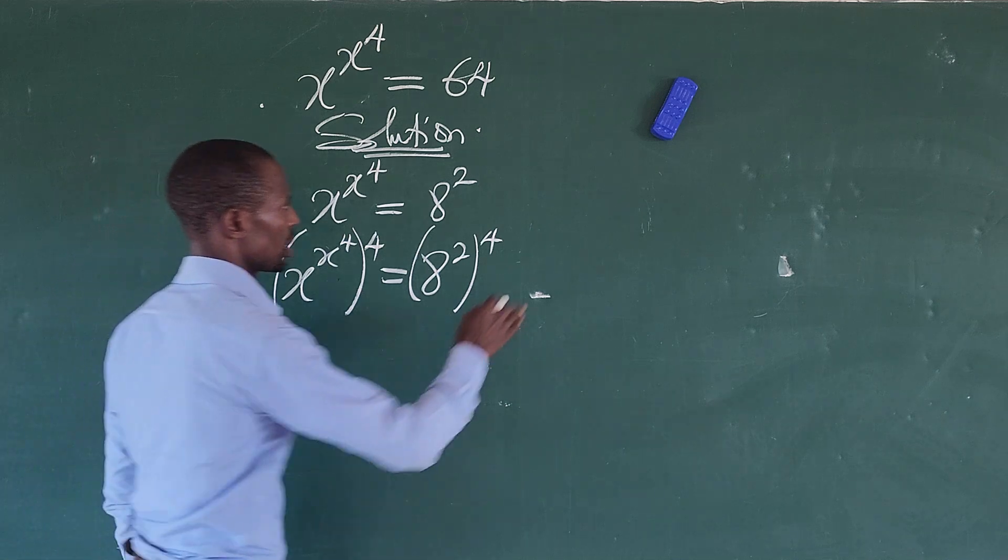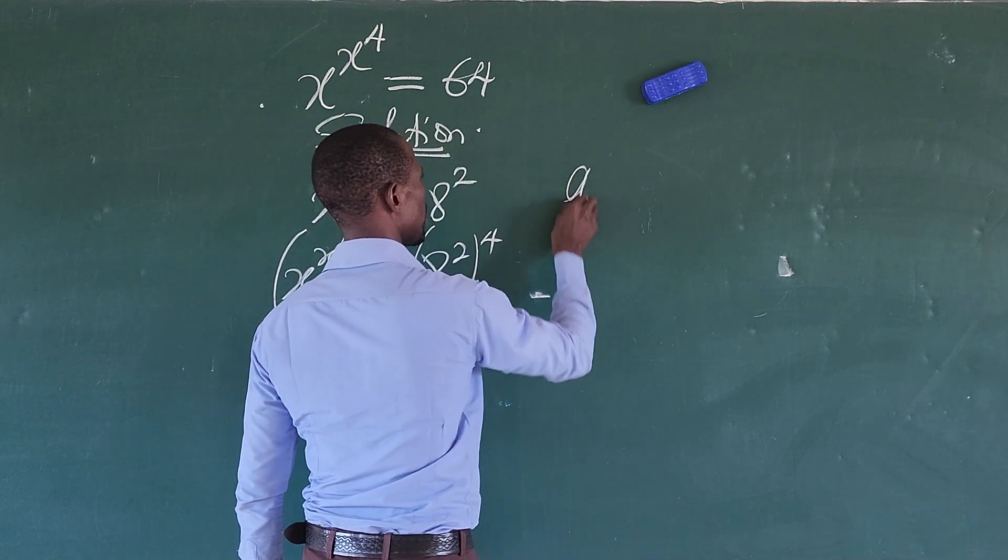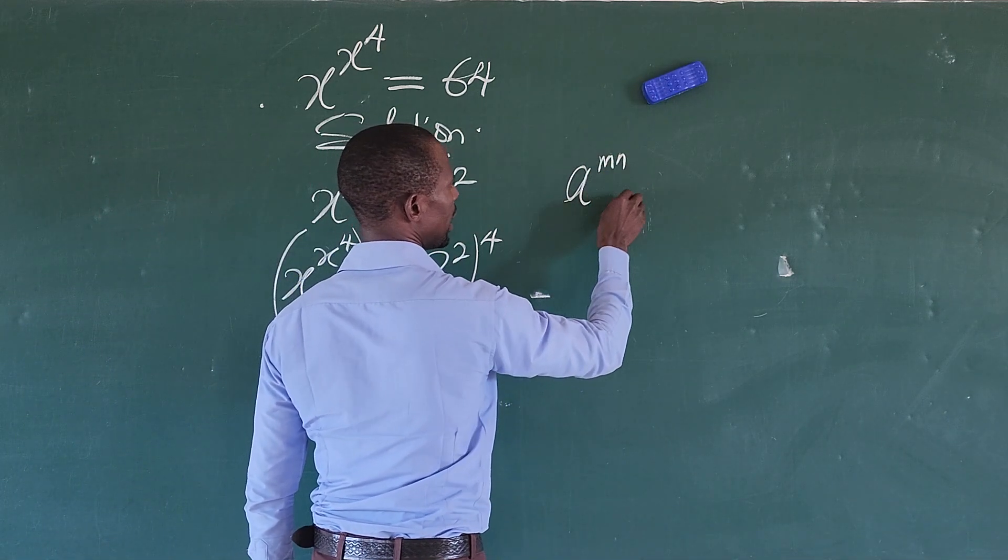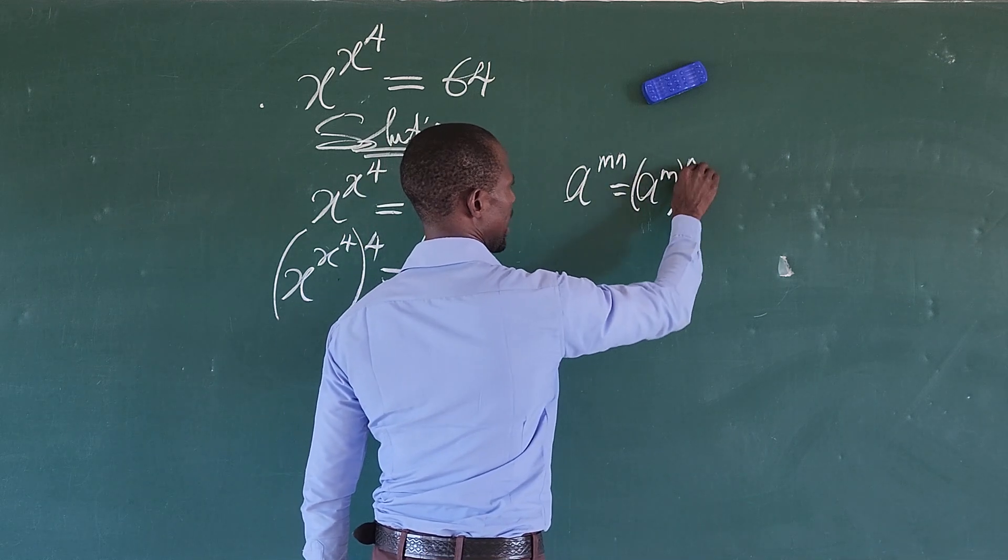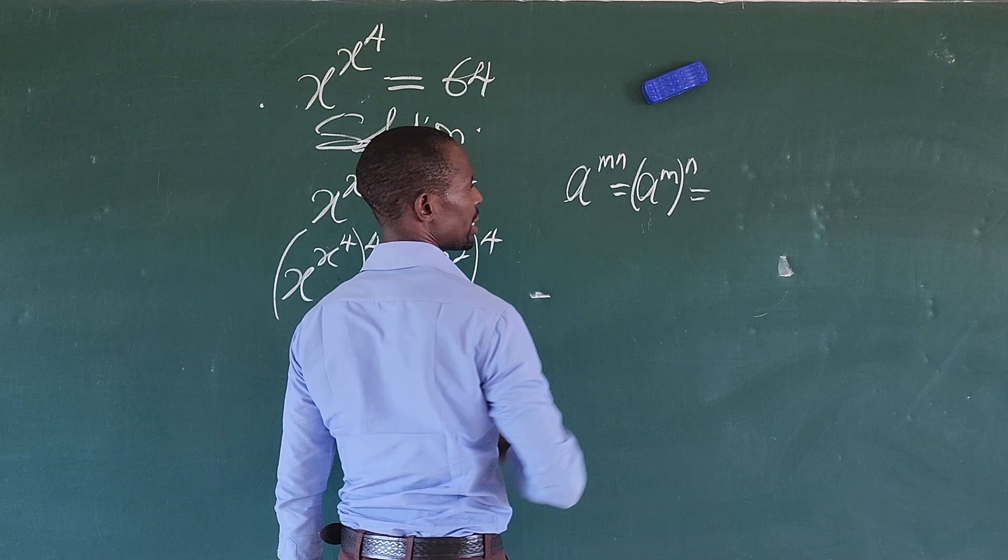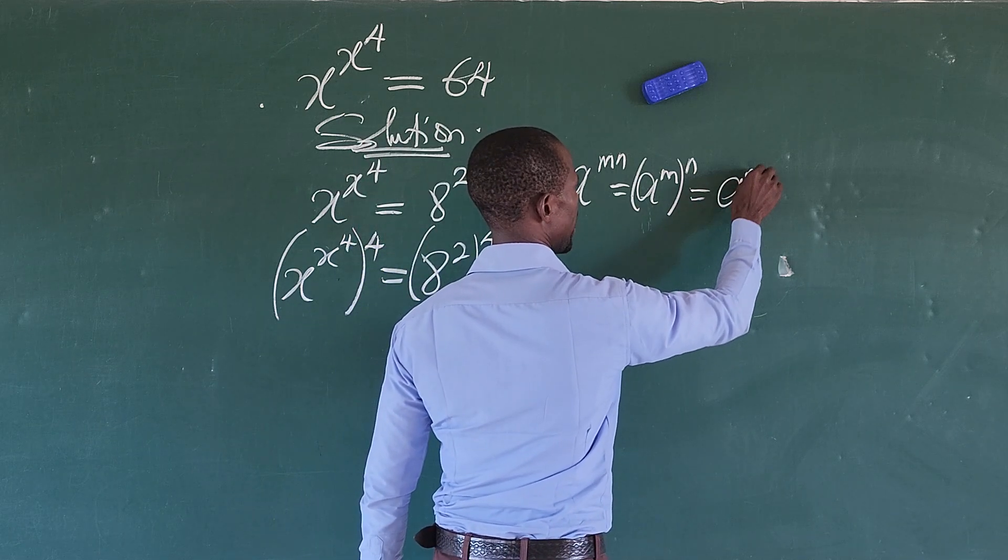Alright, so, but remember the law. It says that if you have your a to the power of m, n, this is equal to your a to the power of m bracket n, and we can exchange this exponent to give us a to the power of n bracket m.